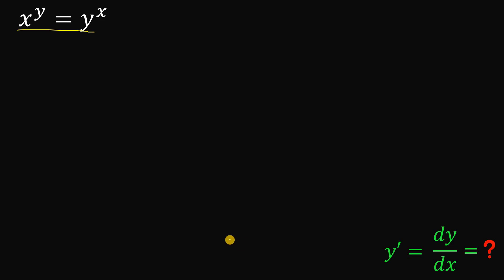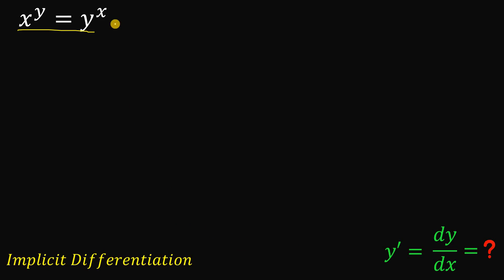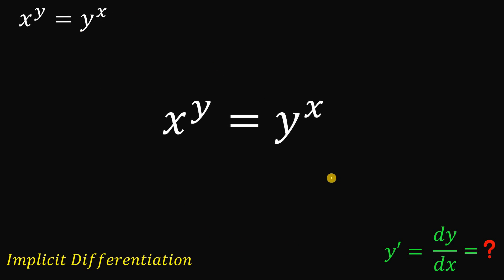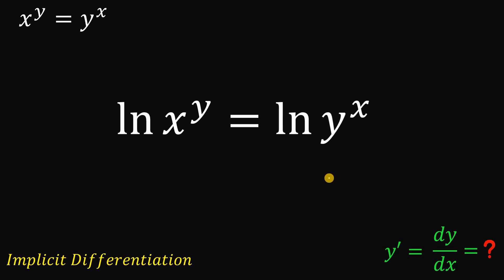By the way, this topic is called implicit differentiation. So, to answer this, let's get our equation. What we're going to do is to take the natural log on both sides. Now, the question is: why do we need to take the natural log on both sides? Here's the reason.